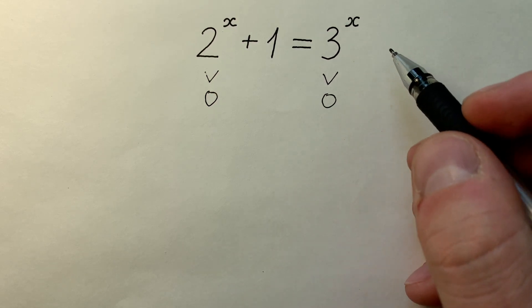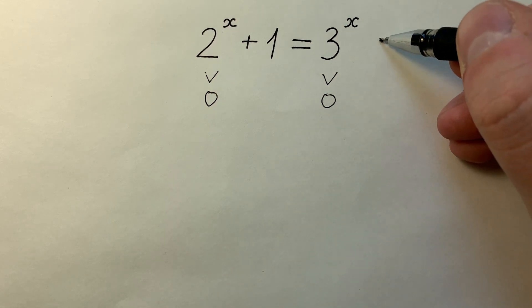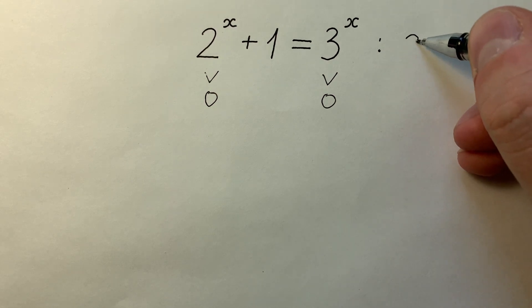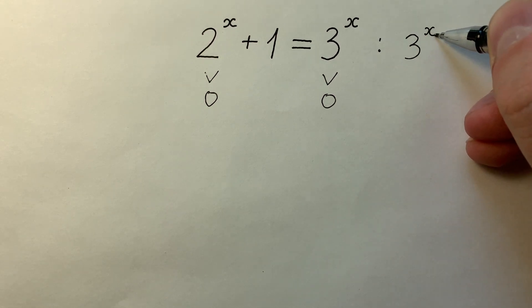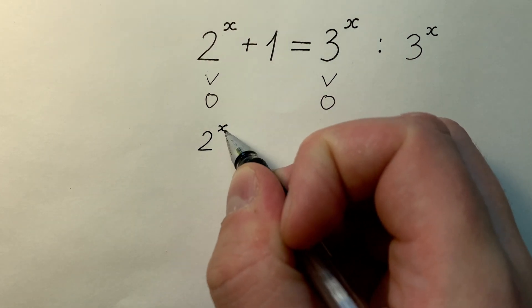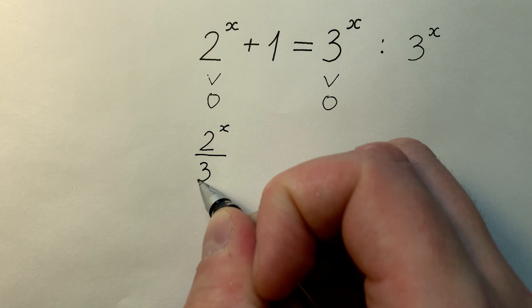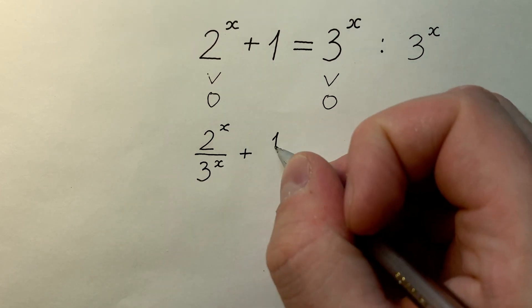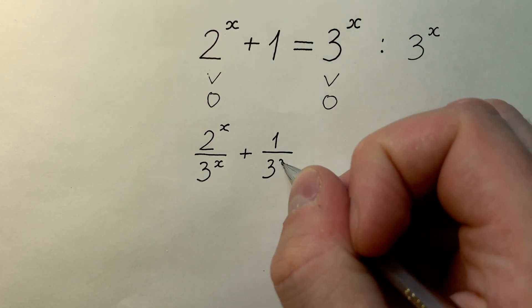So we can divide both sides of these equations by 3 to the power of x. In this case we get that 2 to the power of x divided by 3 to the power of x plus 1 divided by 3 to the power of x.